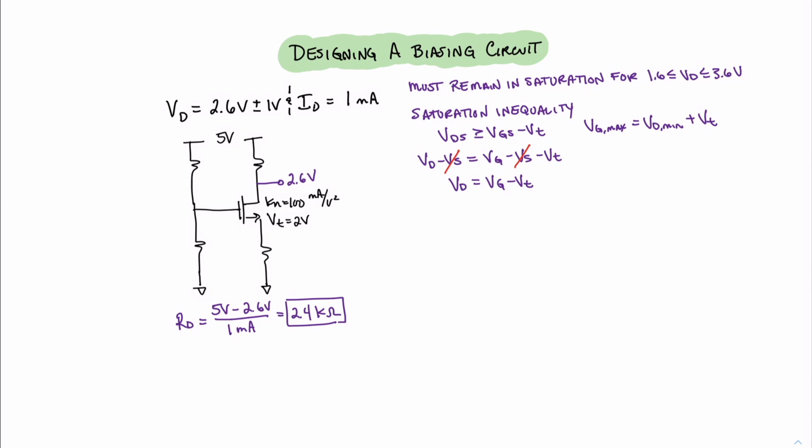That allows us to write that VD equals VG minus VT. Rearranging this, we can set it equal to VG. In this case, remember, it's VG max, so we say VG max equals VD min plus the threshold voltage VT. Since the minimum value of VD is equal to 1.6 volts, we can write 1.6 plus 2, that's the threshold value, is equal to 3.6 volts. With this, we know the maximum allowed value at the gate.